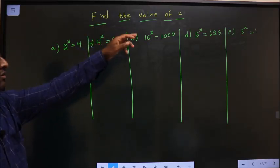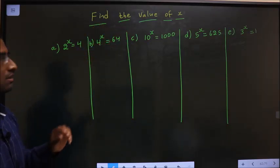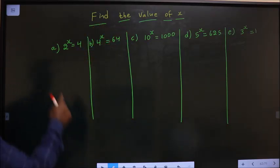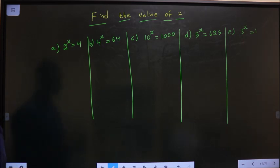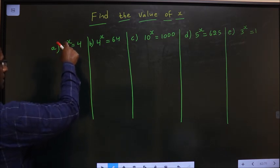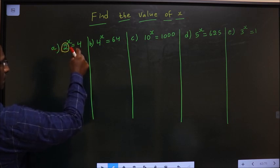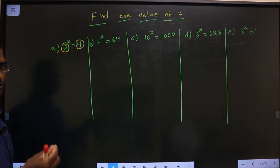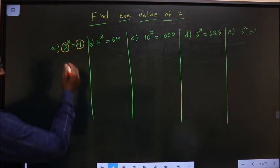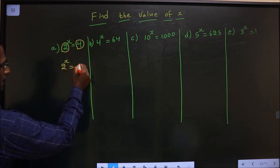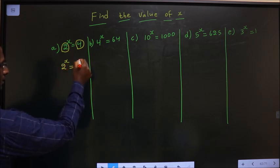Find the value of x. Problem 1: 2 power x equal to 4. The observation here is that the base is 2. So on the right side, also make the base 2. So 2 power x equal to 4 is nothing but 2 power 2.